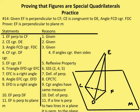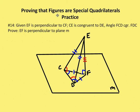This practice problem involves several lines that are potentially perpendicular to plane M. I'm given that EF is perpendicular to CF, CE is congruent to DE, and angle FCD is congruent to angle FDC. I have marked up the diagram accordingly with these relationships.